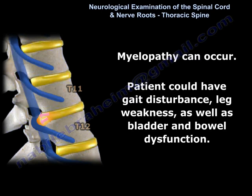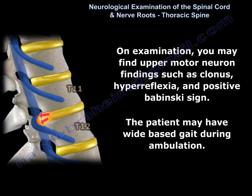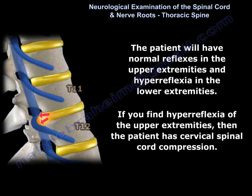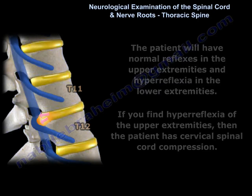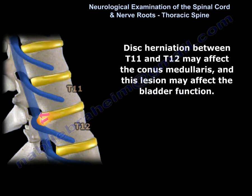Myelopathy can occur. The patient can have gait disturbance, leg weakness, and bladder and bowel dysfunction. On examination, you may find upper motor neuron findings such as clonus, hyperreflexia, and a positive Babinski sign, along with wide-based gait. The patient will have normal reflexes in the upper extremities and hyperreflexia in the lower extremities. If hyperreflexia is found in the upper extremities, the patient has cervical spinal cord compression.